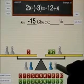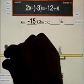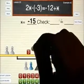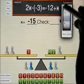If x is negative 15, negative 15 and negative 15 is negative 30. Plus 3 would be negative 27.